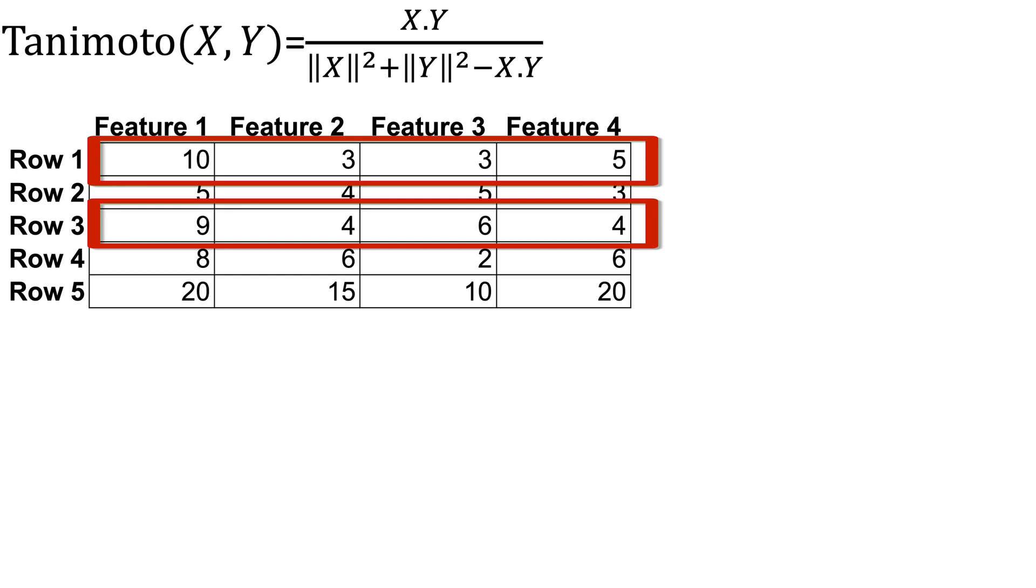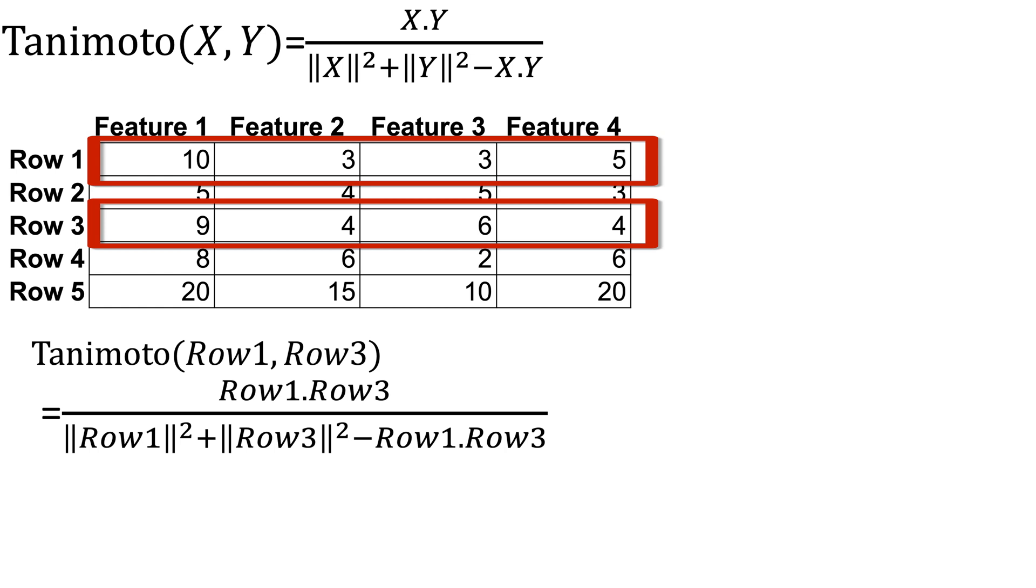The largest Tanimoto similarity score between two vectors is 1. Tanimoto similarity is 1 when two vectors are the same. In our case, row 1 and row 3 are different. Therefore, Tanimoto similarity will be smaller than 1. Let us compute the Tanimoto similarity between row 1 and row 3.